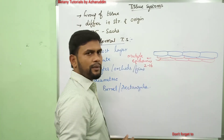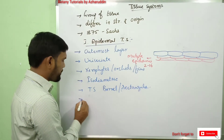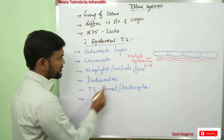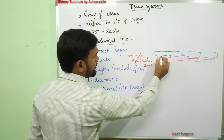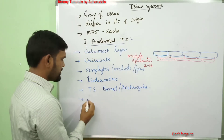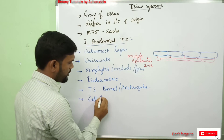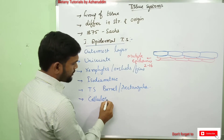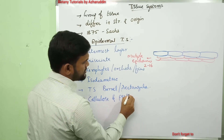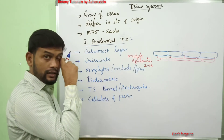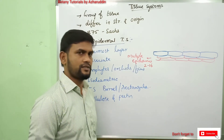The cell wall of epidermal cells is composed of cellulose and pectin. These two substances are present in the walls of epidermal cells.